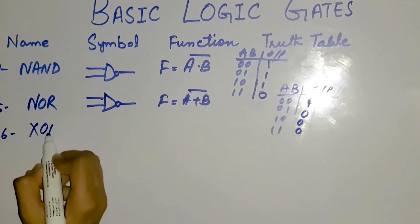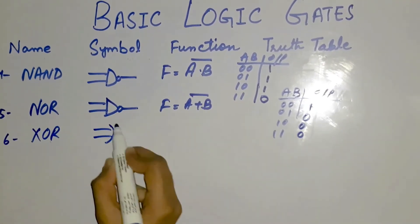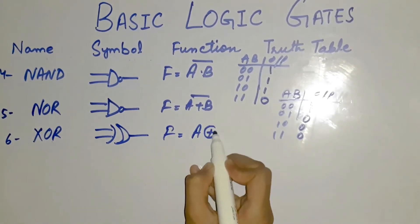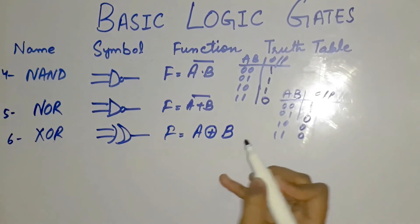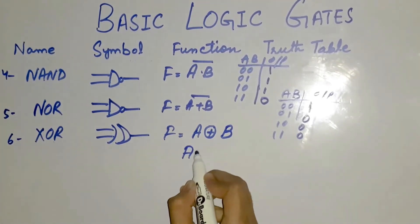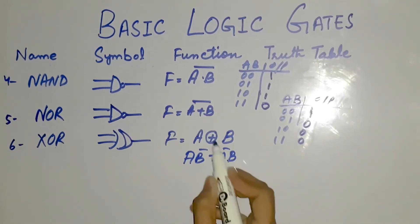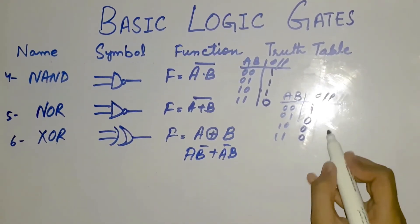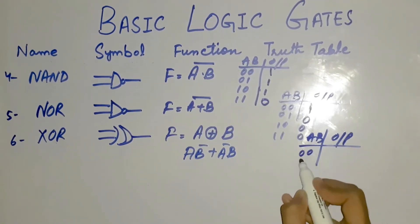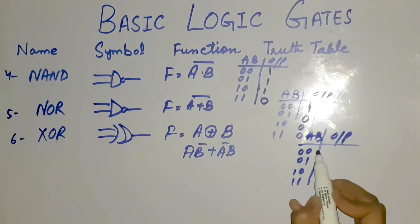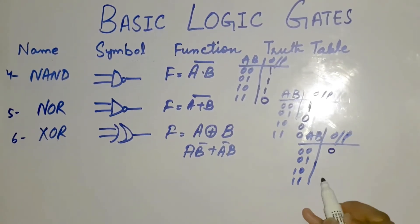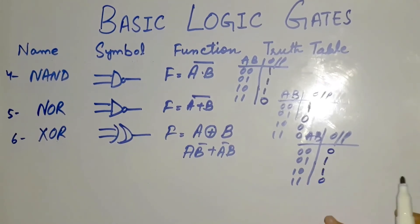The sixth one, we have the XOR gate. It is represented by this symbol. f equals a ⊕ b, which can also be written as a·b̄ plus ā·b. Its truth table is: a=0,b=0 gives 0; a=0,b=1 gives 1; a=1,b=0 gives 1; a=1,b=1 gives 0. When both inputs are the same — 0-0 or 1-1 — it gives 0, and when at least one input is different, it gives 1.